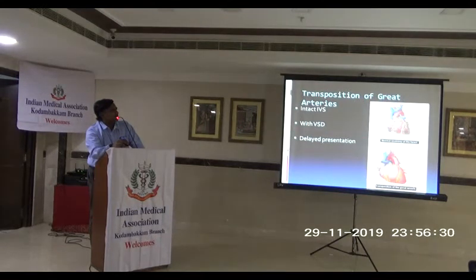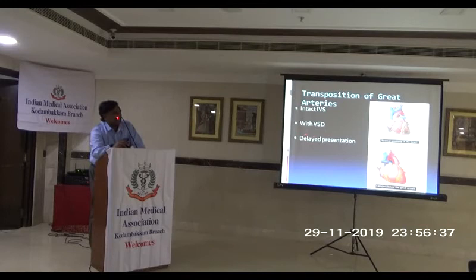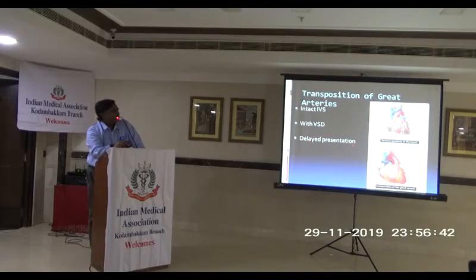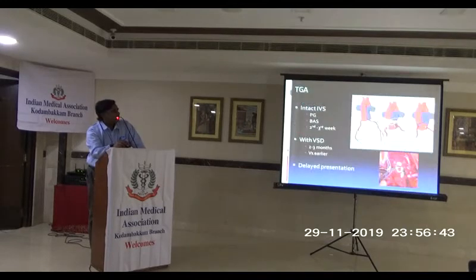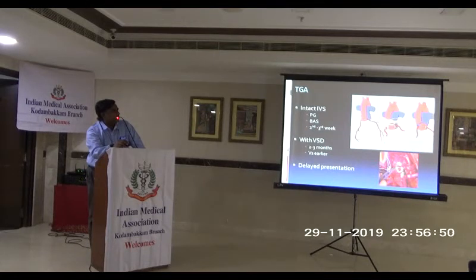Transposition of great arteries — if it's with intact IVS or with VSD. If intact IVS, we can do the arterial switch operation in the second week of life. If with a VSD, it's usually in the second month of life. If intact IVS, we must operate before the LV depressurizes. Two to three months is fine. We perform the arterial switch — the RV gives rise to the aorta and the LV gives rise to the PA; we swap them and re-implant the coronaries.